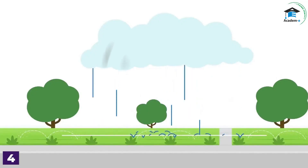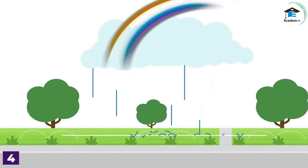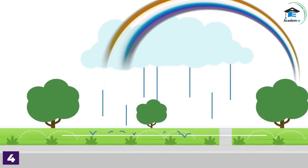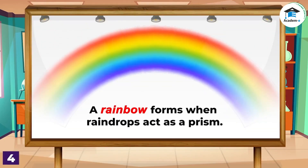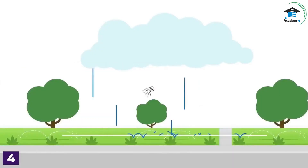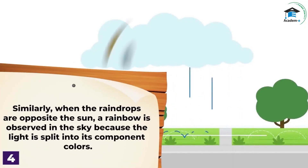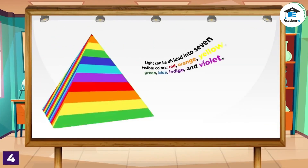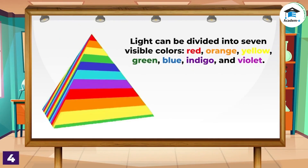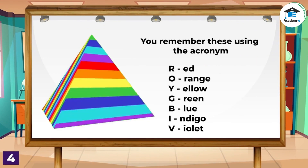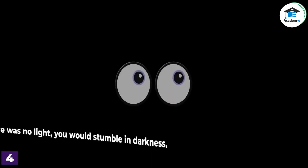When the sun is out and raindrops fall on the ground, what do you sometimes see in the sky? A rainbow forms when raindrops act as a prism. A prism can be a glass or other clear objects that separate light into a band of colors. When the raindrops are opposite the sun, a rainbow is observed in the sky because the light is split into its component colors. Light can be divided into seven visible colors: red, orange, yellow, green, blue, indigo, and violet. You can remember these using the acronym ROYGBIV.